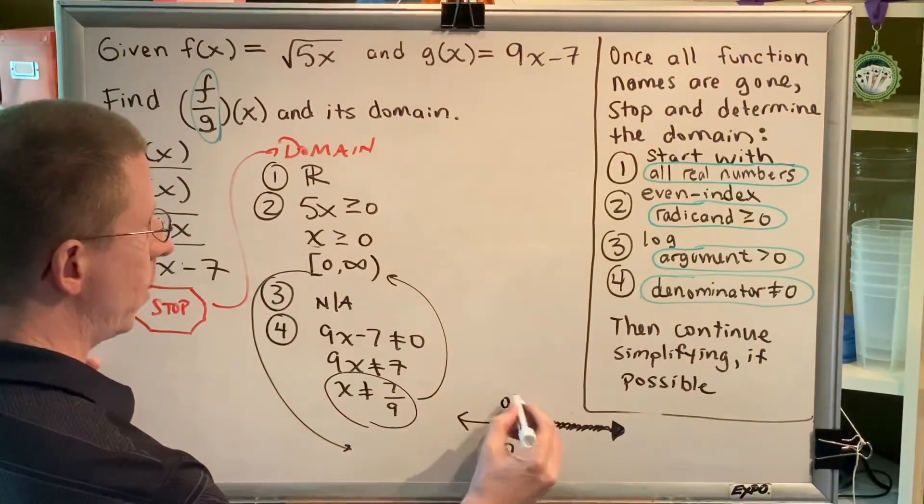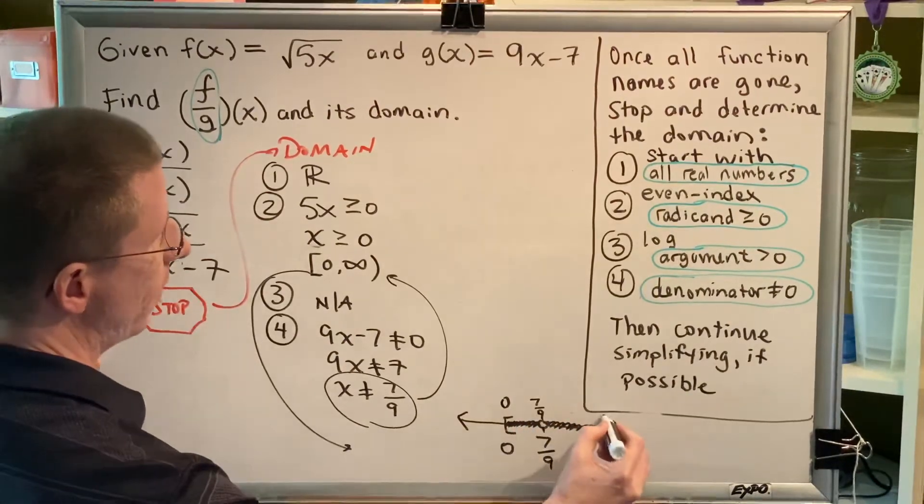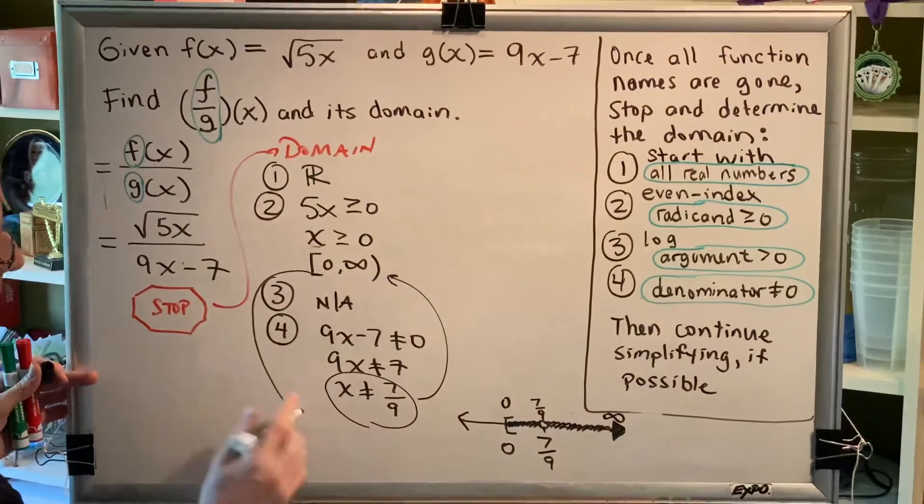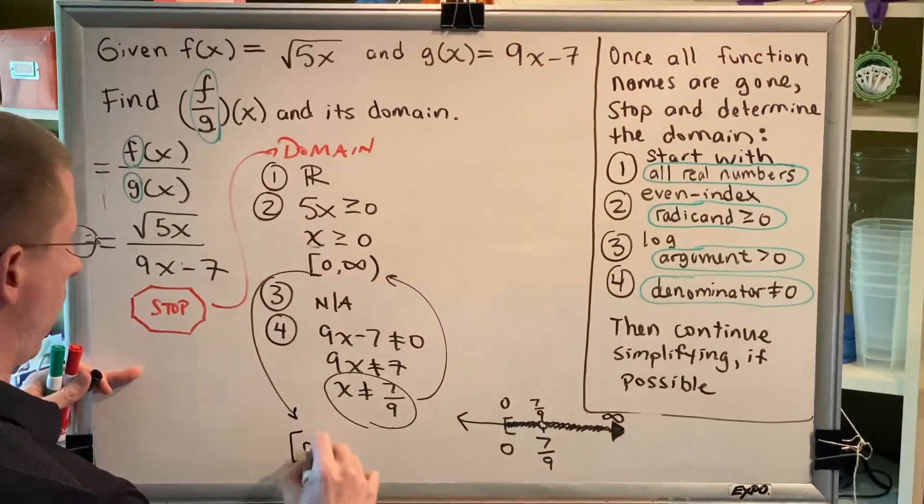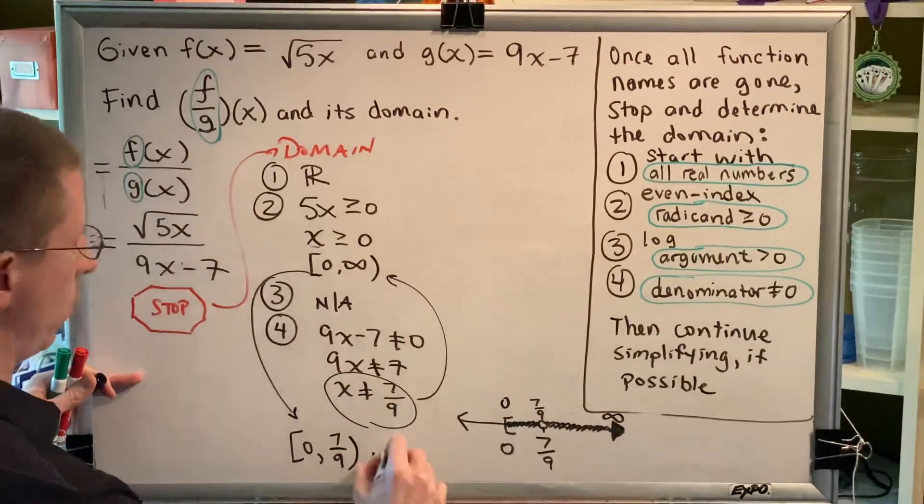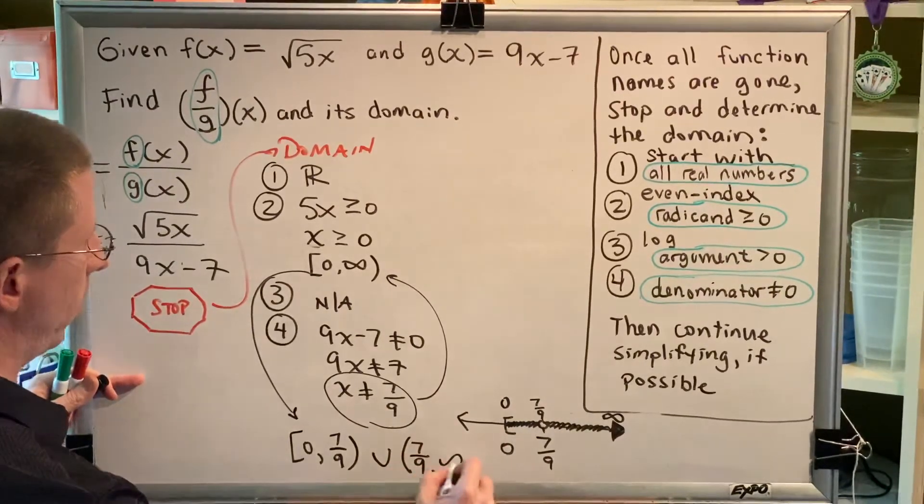This is going to divide our graphed interval into two intervals. The first will be the numbers from zero to seven ninths, and the rest will be the numbers from seven ninths all the way to positive infinity. So as an interval, our final answer will look like this: bracket zero comma seven ninths parenthesis union parenthesis seven ninths comma infinity.